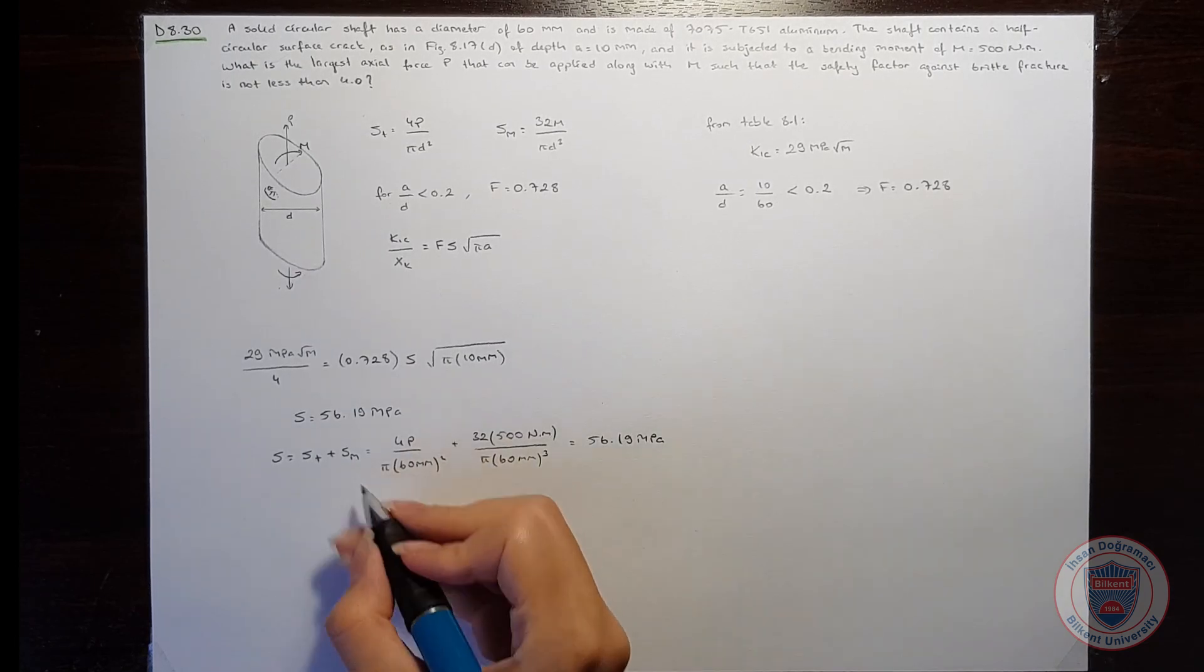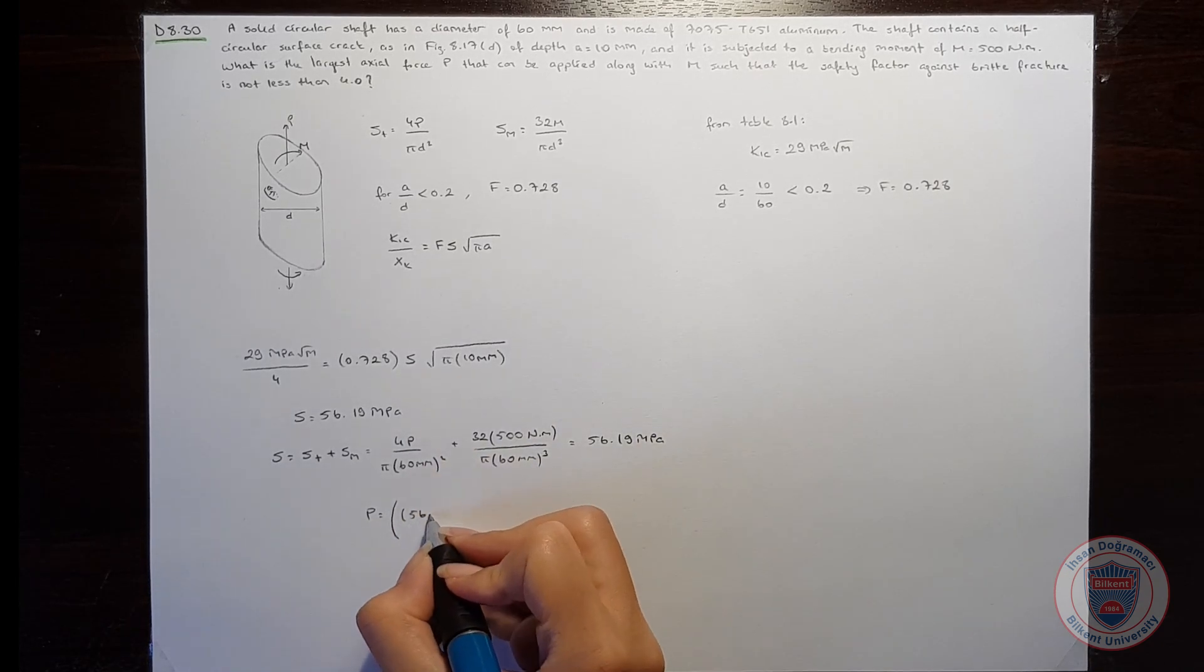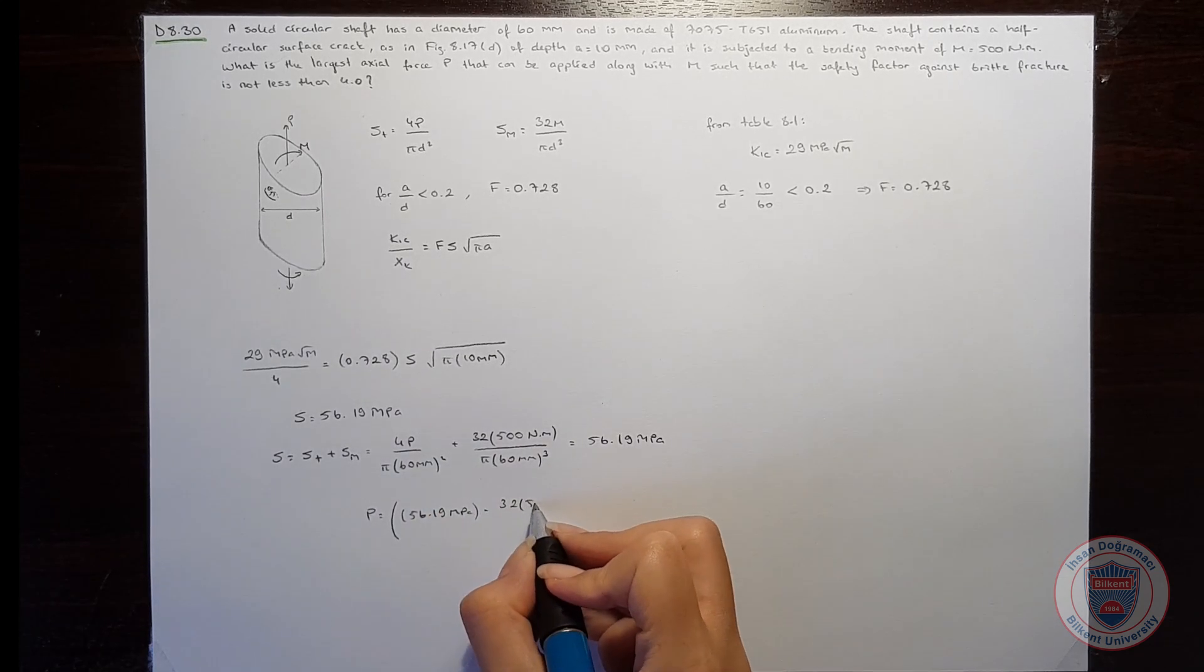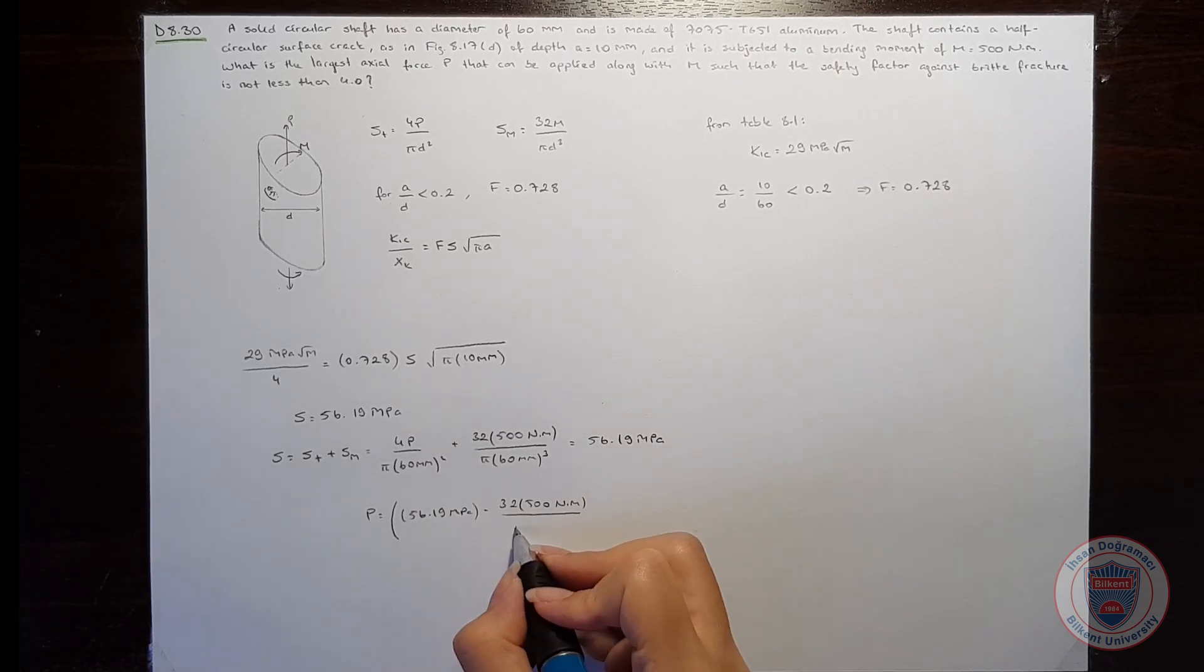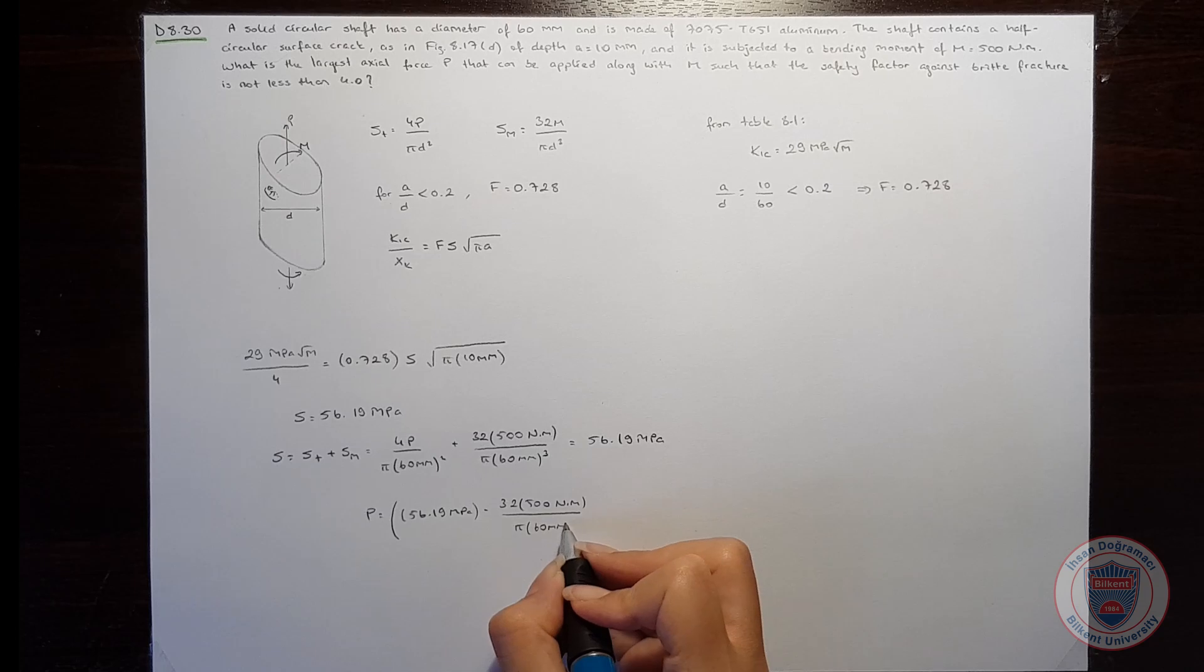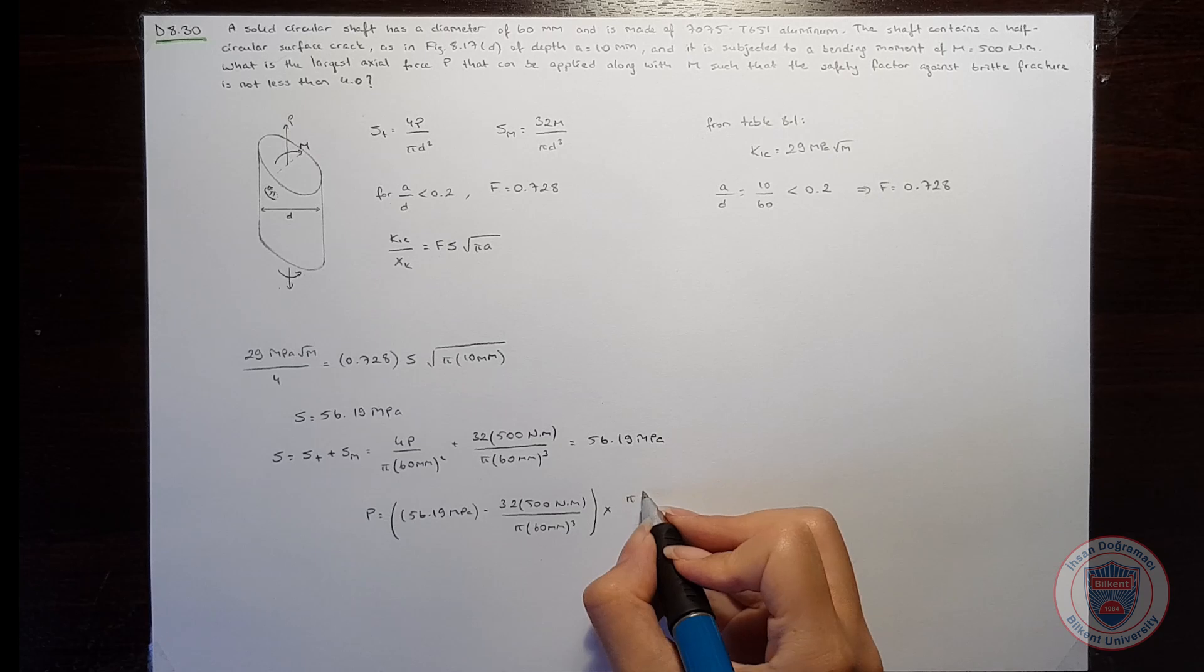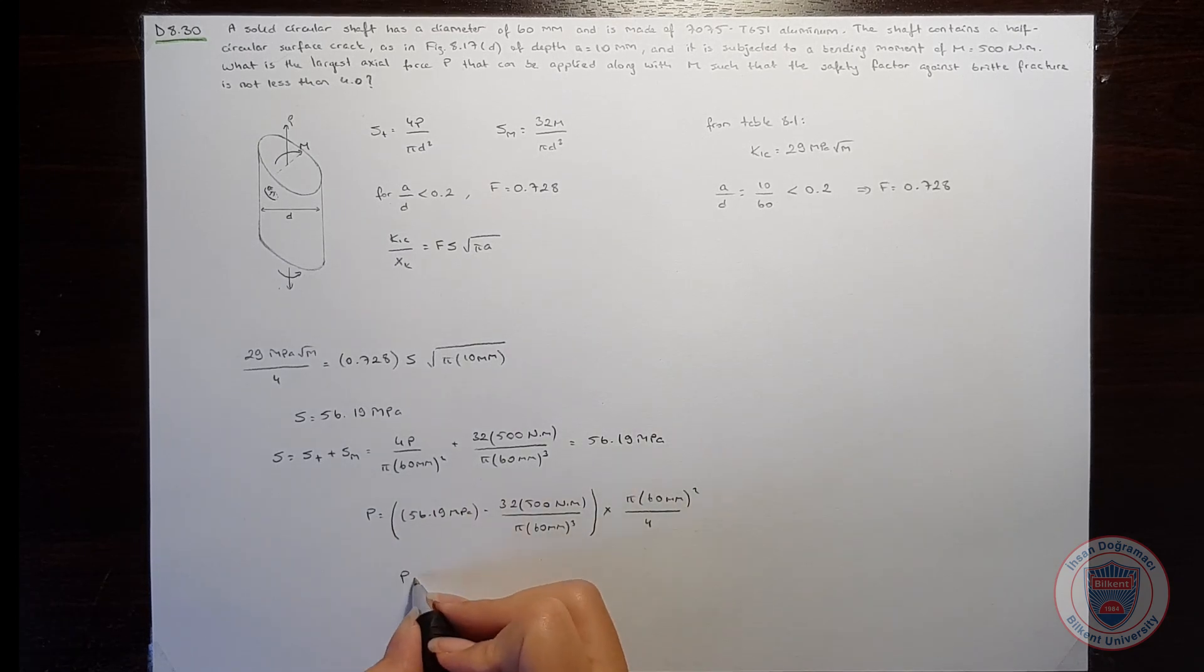So when we make some arrangements, we can leave the P alone, and this will give P is equal to 92.2 kN.